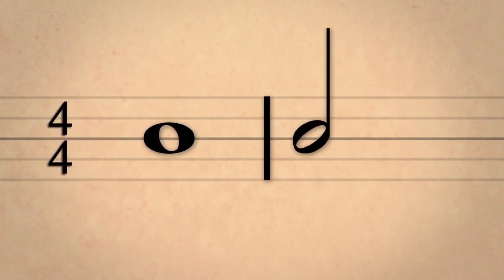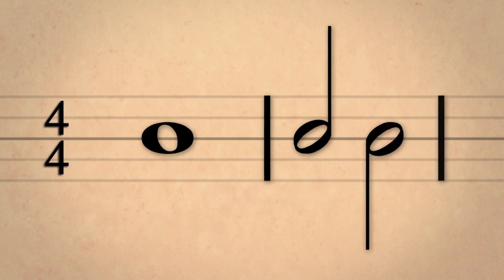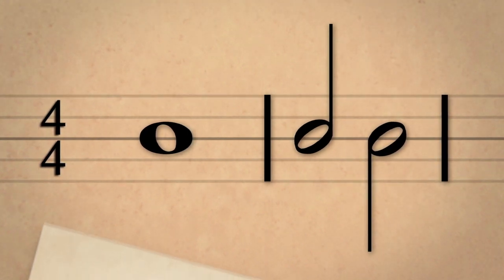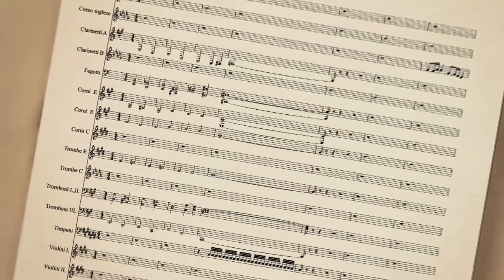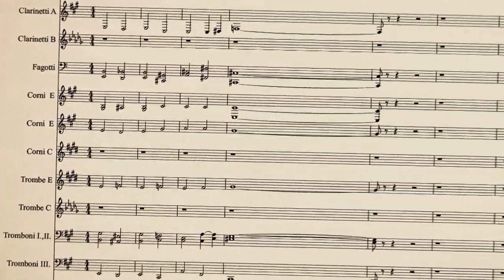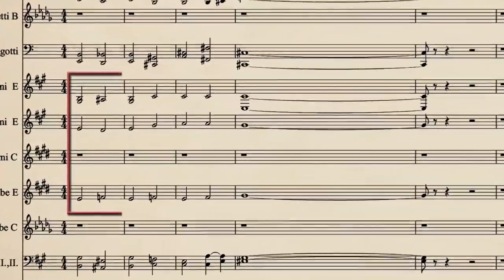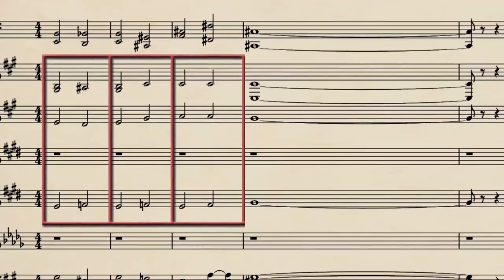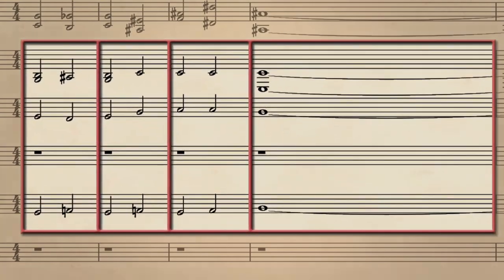A half note would get half of the whole or two beats. Let's listen to the beginning of Dvořák's New World Symphony's slow movement. This brass chorale has three measures of half notes, and then one measure of a whole note.